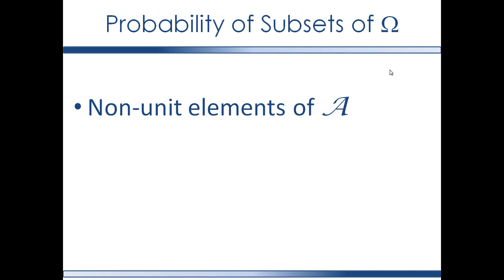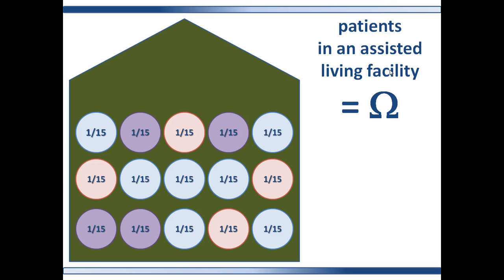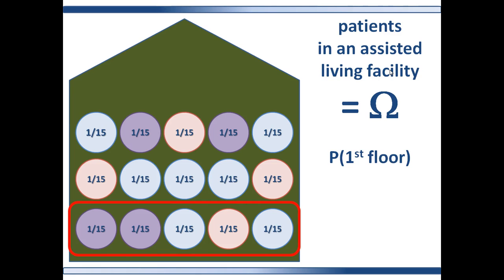We just looked at outcomes in the outcome set showing up as unit sets in the event set. We can also look at other events in the event set — those that contain subsets of elements from the outcome set. How do we know their probability measures? By summing the unit sets they contain, because that is a property of measures in general. Going back to the assisted living facility, this slide depicts where patients sleep — the first, second, and third floors. The probability of being a first floor dwelling patient equals 5/15ths, or one third.